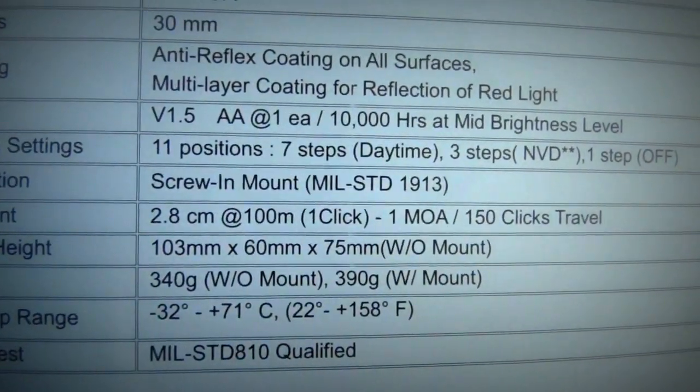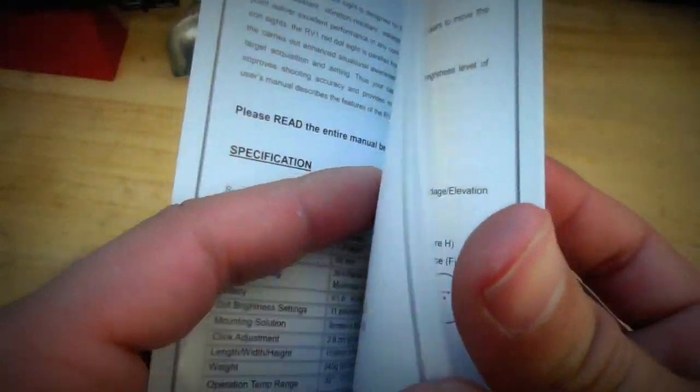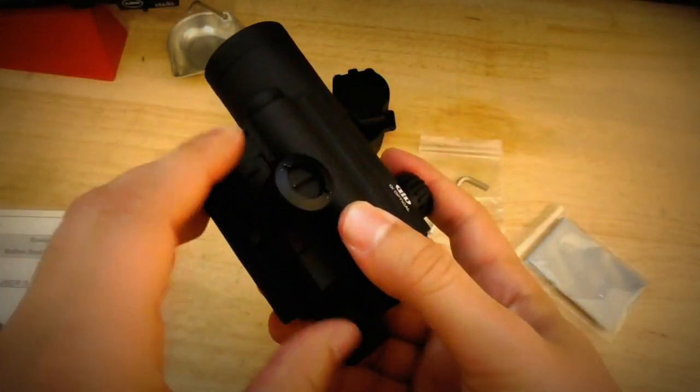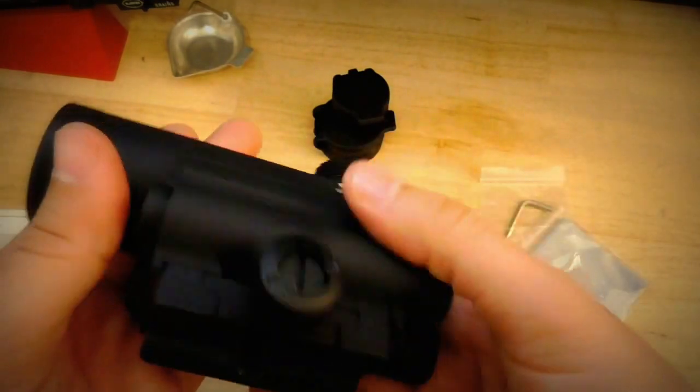The rail is a MIL-STANDARD 1913 Picatinny. However, it can be replaced with an ARMS No. 17 style mount if you want to take that off. Allen key is included. So that's pretty good.